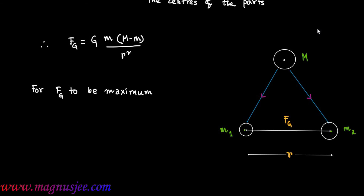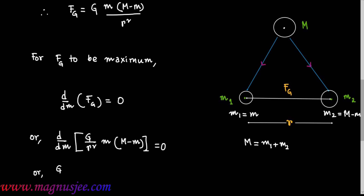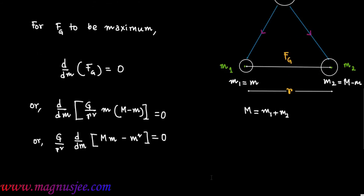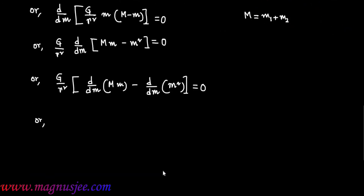For FG to be maximum, d/dm of FG = 0. Since capital M = m1 + m2, we differentiate: d/dm of [G/r² · m·(M − m)] = 0. Taking G/r² outside as a constant: d/dm [m·(M − m)] = 0, which gives d/dm [mM − m²] = 0.